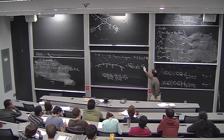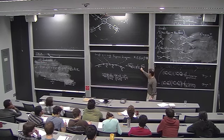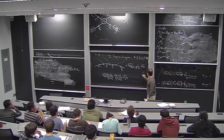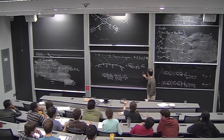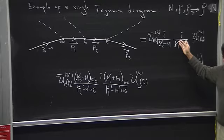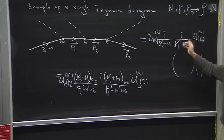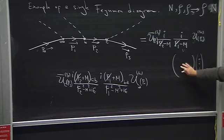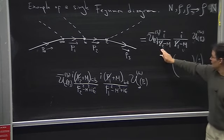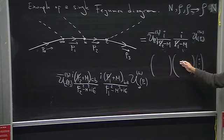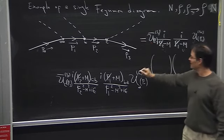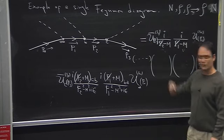Repeating why it's written this way: u(P0) is a four-component object, the propagator (P-slash − M)^{-1} is a matrix, another propagator is another matrix, and u-bar is a row vector. This notation is using the convention for the inverse, and each object is a matrix being multiplied in sequence.